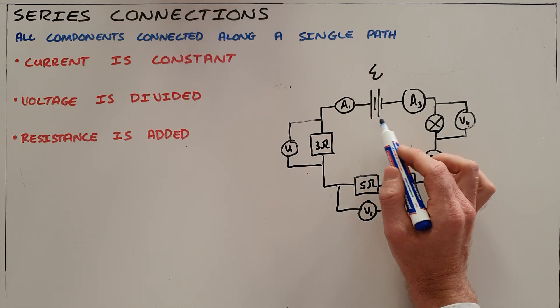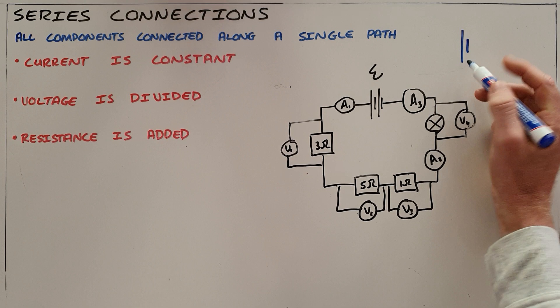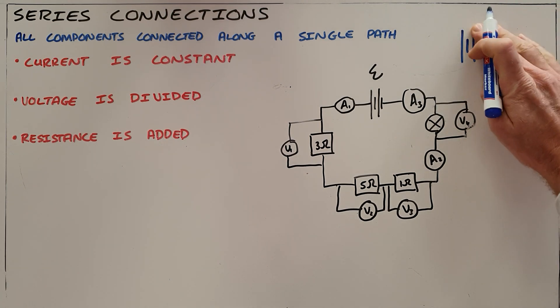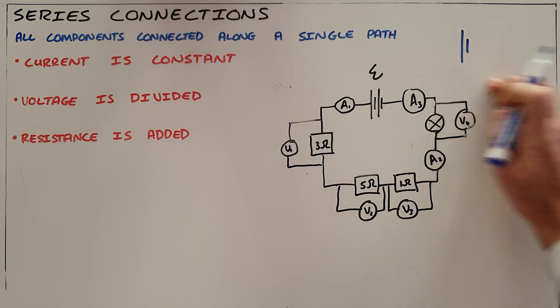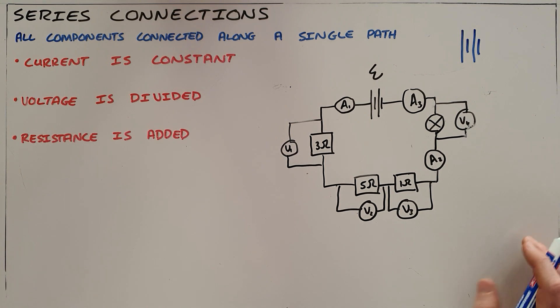Please note the difference here. We know that this is the symbol for a cell and a battery is more than one cell. So if you have a circuit in which that is drawn, that is a cell, and then multiple cells make a battery.